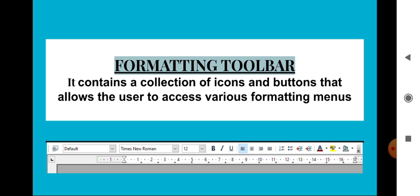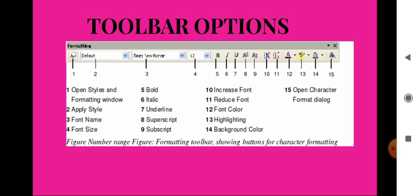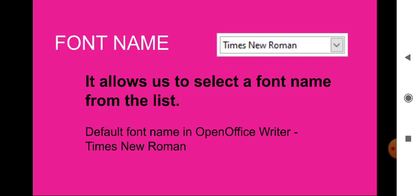The toolbar options available in the formatting toolbar include: apply style, font name, font size, bold, italic, and underline. You can apply these options to the text in your document. The first option is font name, which allows the user to select a font name from the list available in Writer.